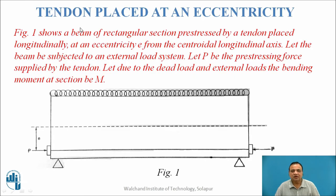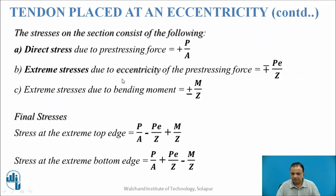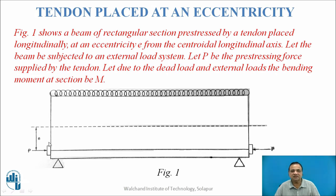This is an example. Figure 1 shows a beam of rectangular section, pre-stressed by a tendon placed longitudinally at an eccentricity E from the centroidal axis. Let the beam be subjected to an external loading system. Let P be the pre-stressing force supplied by the tendon, and due to dead load and external load, the bending moment at section is Bm.